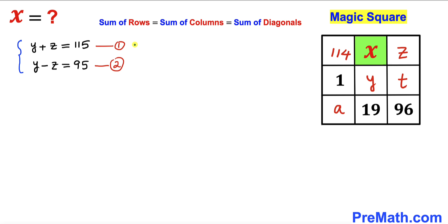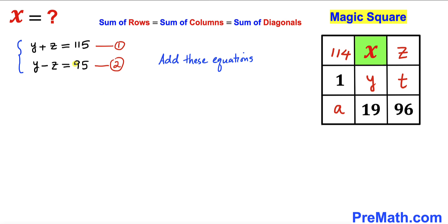We now have a system of two equations with two variables y and z. Let's add these two equations. The positive z and negative z cancel, so we are left with 2y equals 210. Dividing both sides by 2, our y value turns out to be 105.